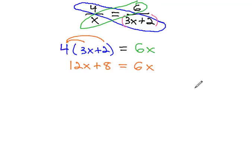And then we can move the variable to one side of the equation by subtracting 12x from both sides. We now have 8 equals negative 6x.